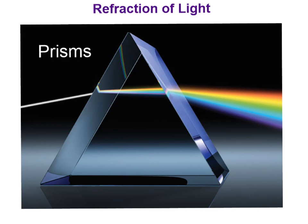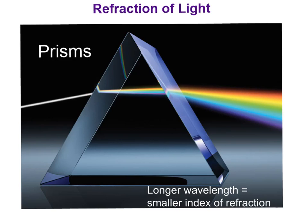Refraction of light explains why you see colorful patterns as light travels through a prism. In a triangular prism, light is refracted twice — once when it enters the prism and again when it goes from the glass prism into the air. A longer wavelength of light has a smaller index of refraction, and in the visible spectrum red has the longest wavelength, so it has the least amount of bending and emerges bent the least.